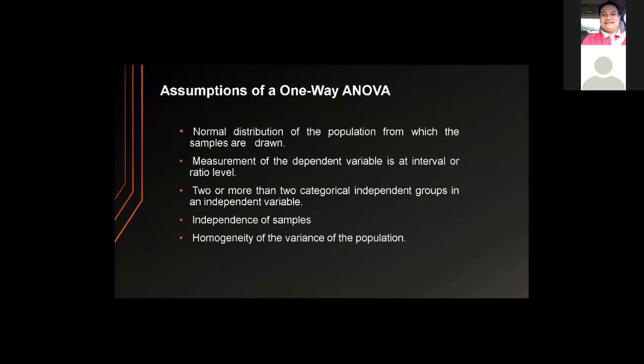The assumptions of a one-way ANOVA are: first, normal distribution of the population from which the samples are drawn; second, measurement of the dependent variable at interval or ratio level; third, two or more categorical independent groups in an independent variable; fourth, independence of samples; and last, homogeneity of the variance of the population.